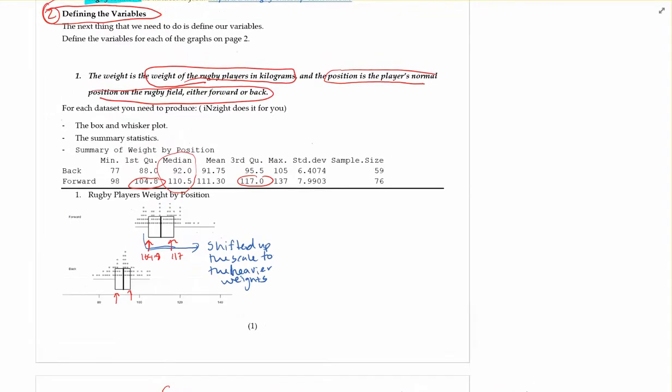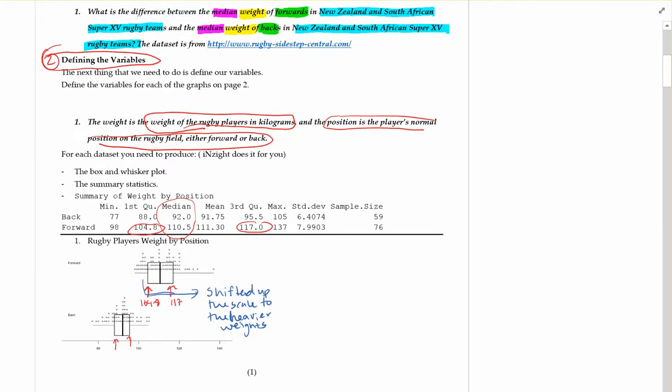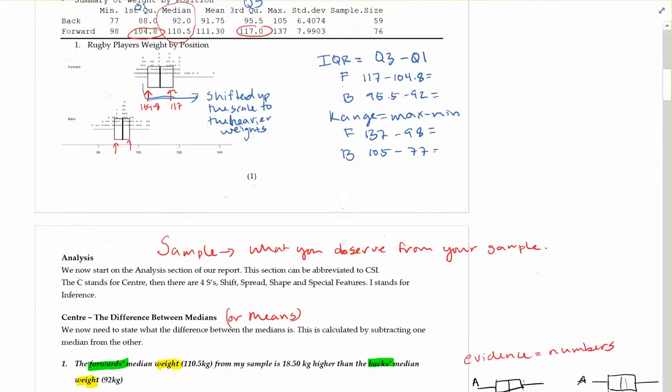So our IQR, this is again Q3 minus Q1, so Q3 is the third quartile, Q1 is the first quartile. So here we would have 117 minus 104.8, and that's for the forwards. For the backs you would have 95.5 minus 92. And for your range, of course, it's max minus min. So for the forwards you're going to have 137 minus 98, and for the backs you would have 105 minus 77. So that's where those numbers are coming from.